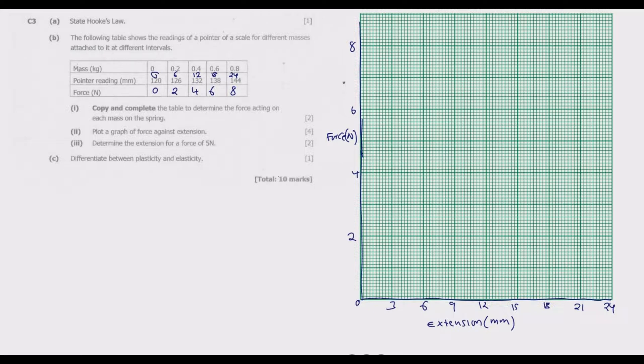We have the graph labeled nicely: extension on the x-axis in millimeter, then force in newtons. Make sure to label it nicely. The first one is 0,0, when it's at 120 there is no extension. Then when we apply a force of 2 newtons the extension goes to 6, so it will be 6,2. The extension is increasing in intervals of 3. We have 2,6 which is at this point.